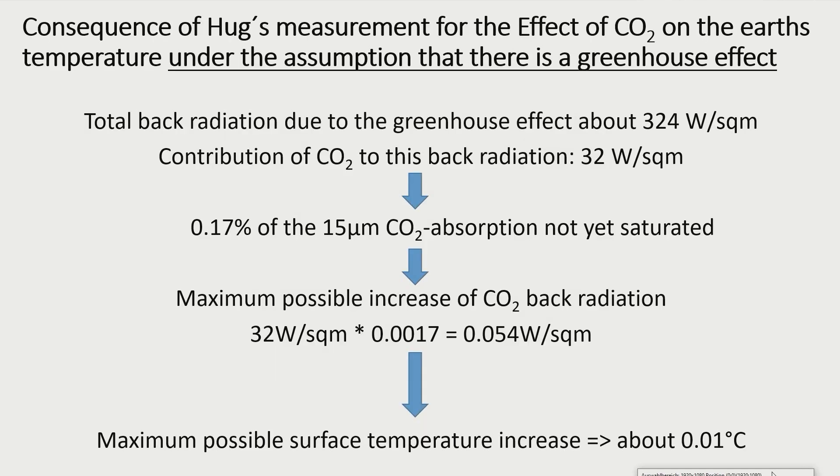When we assume there is a greenhouse effect that somehow causes a total back radiation of 324 Watt per square meter, and that CO2 makes for about 32 Watt per square meter of that total,